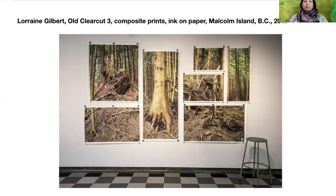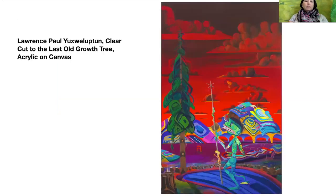Today we're going to be looking at two pieces by Canadian artists. This piece is by Lorraine Gilbert — she's actually one of my old professors from university and she's a photographer. This is 'Old Clear Cut Three,' and the whole piece is all seven photographs put together — it's a composite image. And this piece is by Lawrence Yuxweluptun. It's 'Clear Cut to the Last Old Growth Trees,' an acrylic on canvas painting.